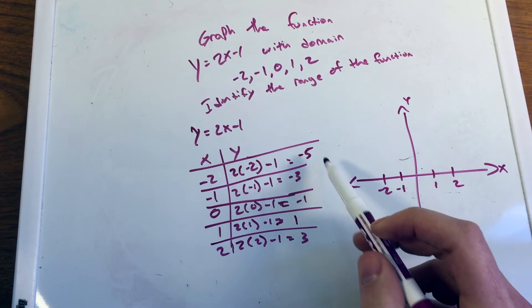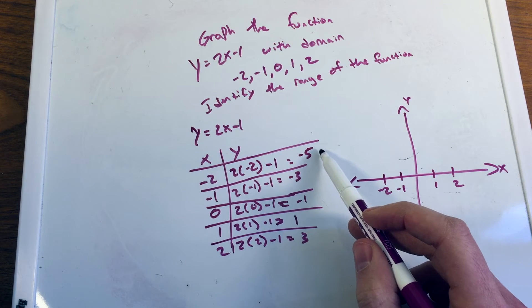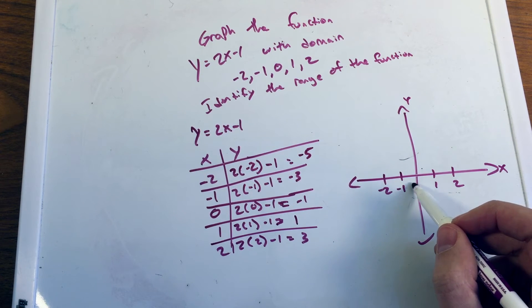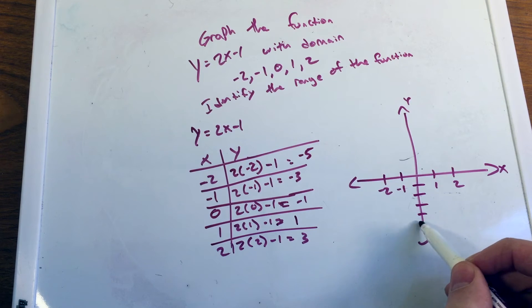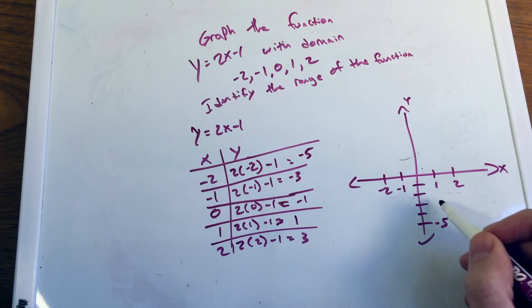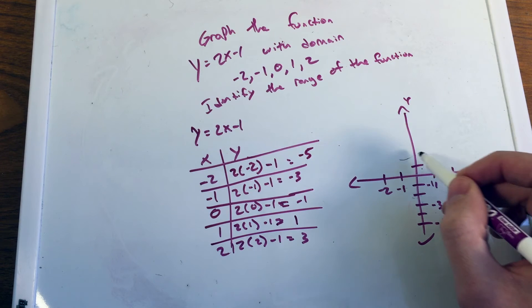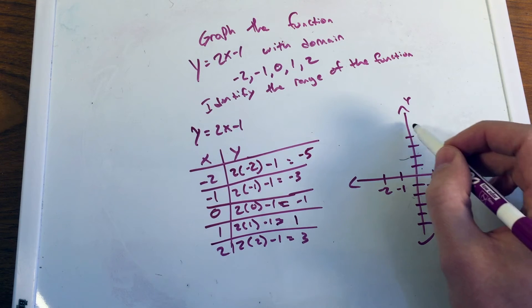And we want to go, well we have a y value, the biggest y value is negative 5. So I'm going to graph down so I hit negative 5. So 1, 2, 3, 4, 5. That's negative 5. We have negative 3 here, negative 1. And up to we'll say 1, 2, 3, 4, 5, 3, and 1.